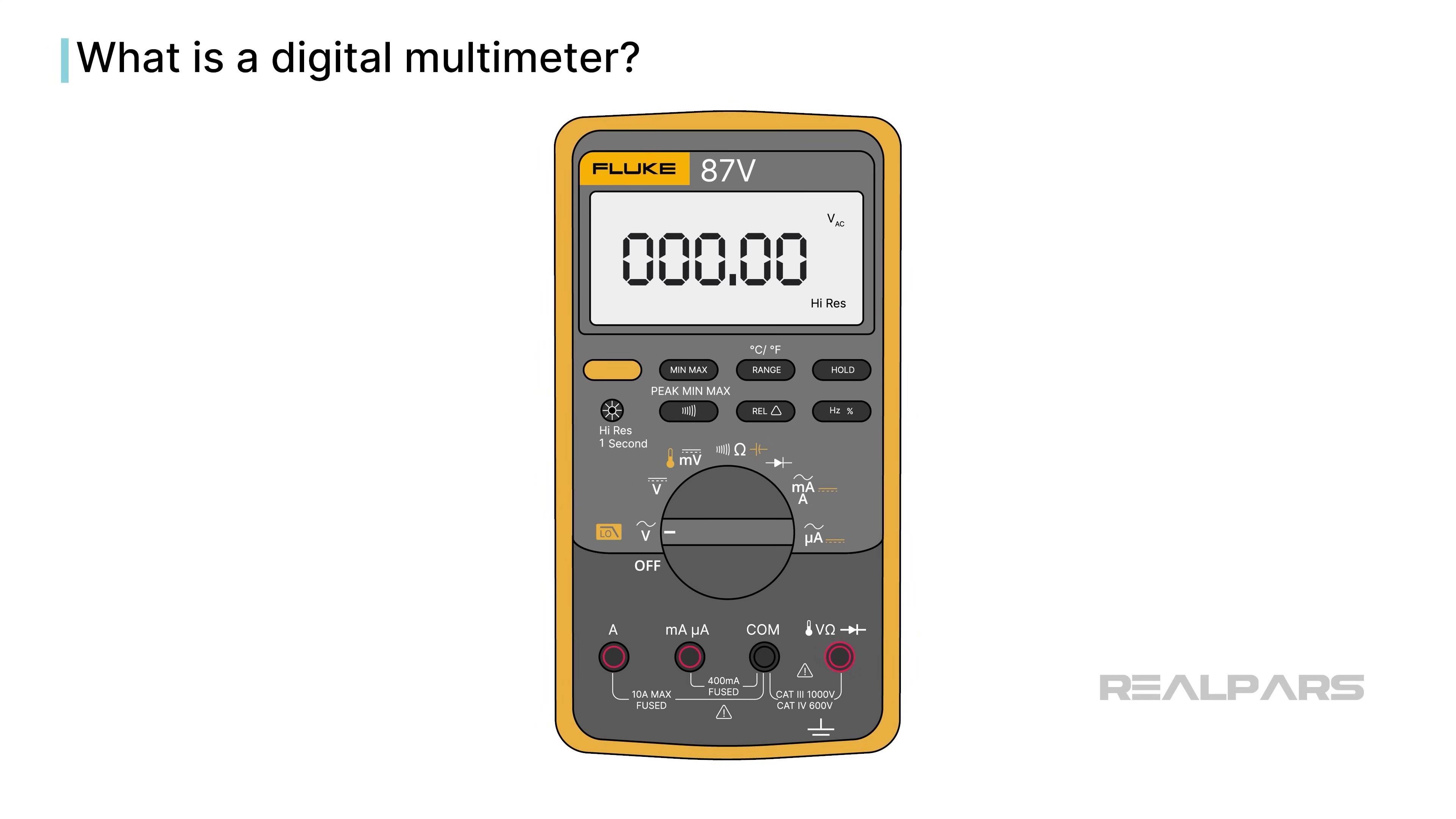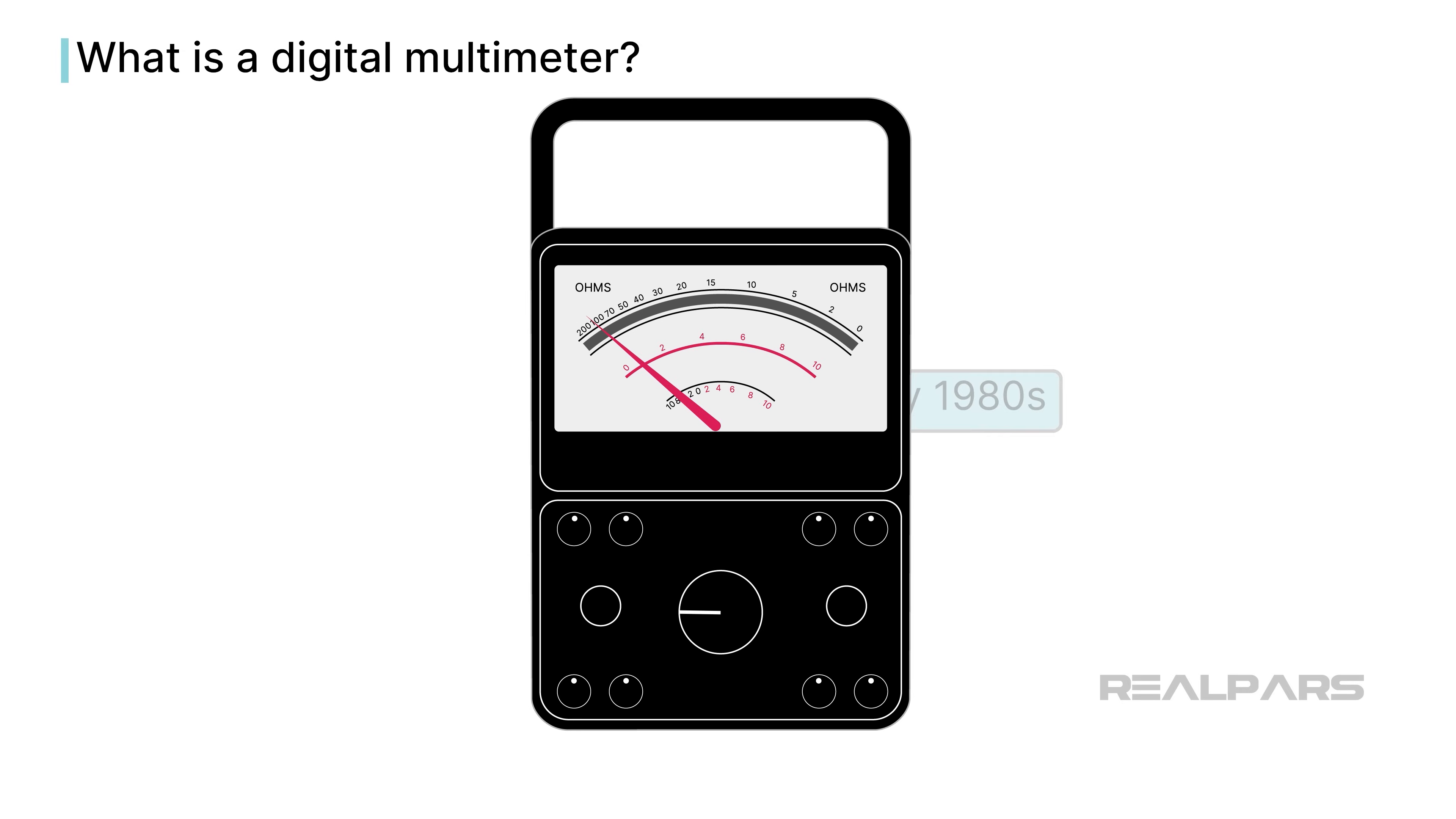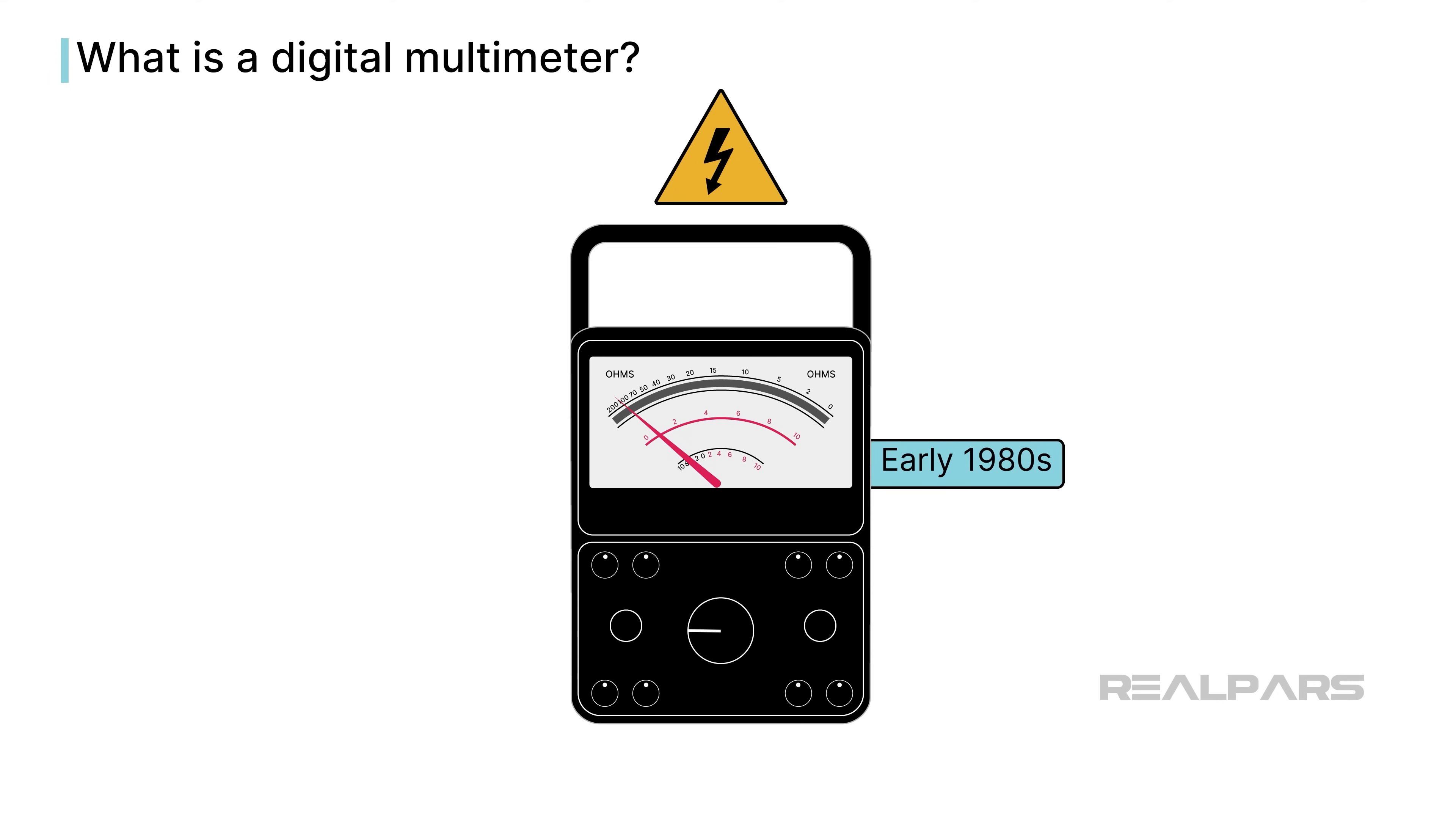Like every other tool, a DMM is useless if you don't know how to use it properly. Until the early 1980s, the measuring device of choice was the overly complicated, somewhat dangerous, and currently seldom seen analog multimeter. Interpreting the reading on an analog multimeter was often daunting, and placing it incorrectly in a circuit could create serious safety issues.